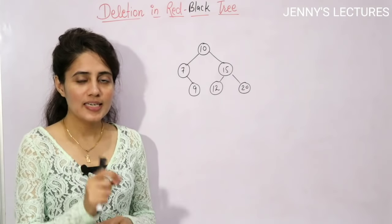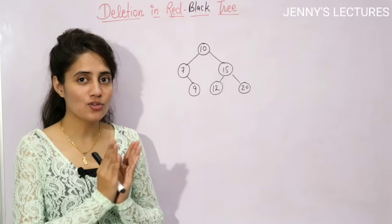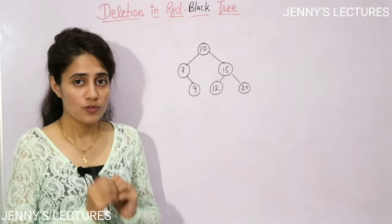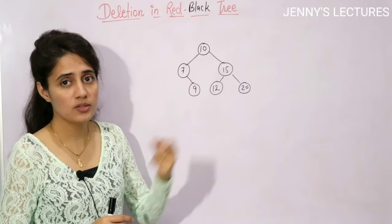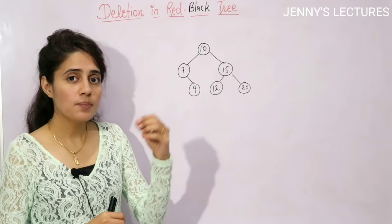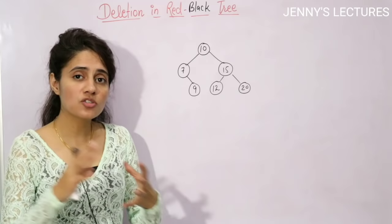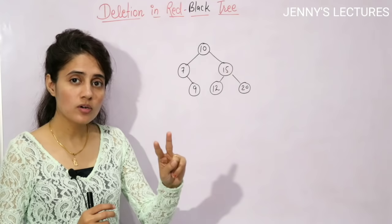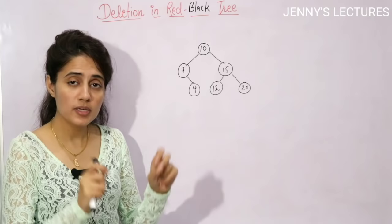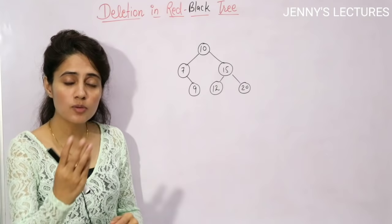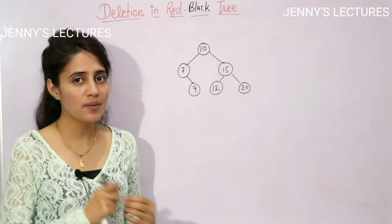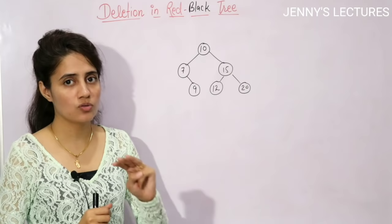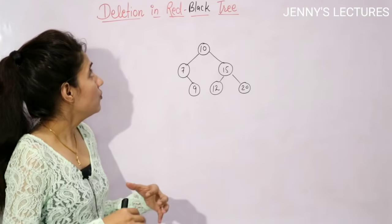The topic is deletion in red-black trees. We have already discussed introduction to red-black trees as well as insertion. A red-black tree is a self-balancing binary search tree with extra properties: the root is black, there are no two adjacent red nodes, and every path from any node to its descendant nil nodes has the same number of black nodes.